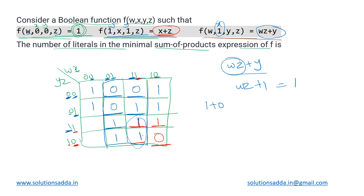The two remaining cells are left as don't-care terms. Using these don't-care terms along with the filled values, we can now form groups in the K-map to derive the minimum SOP expression for f(w, x, y, z).